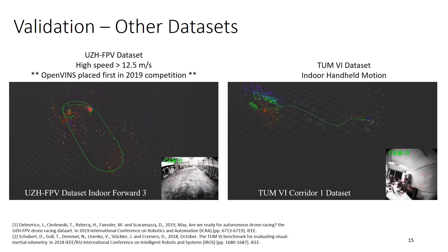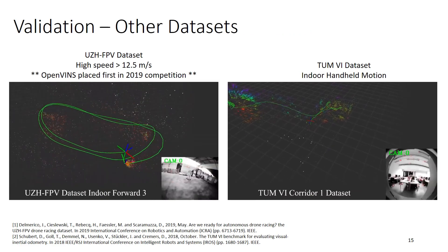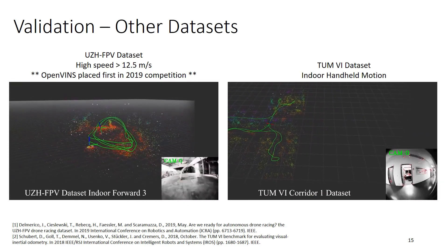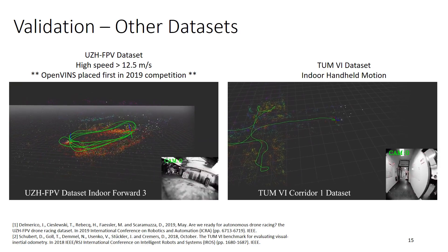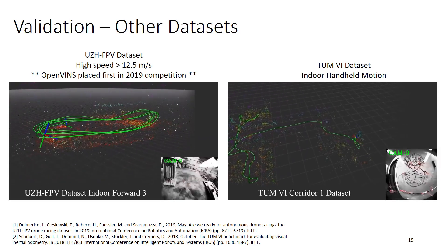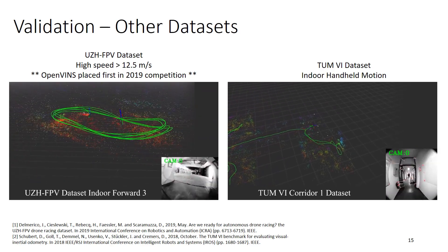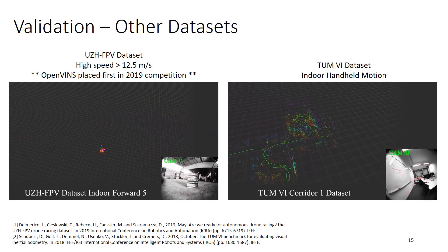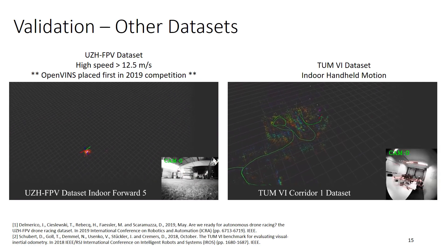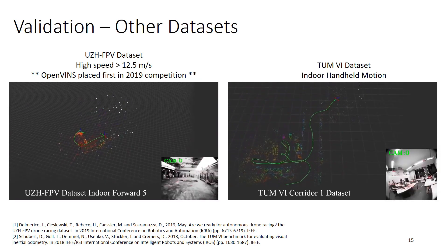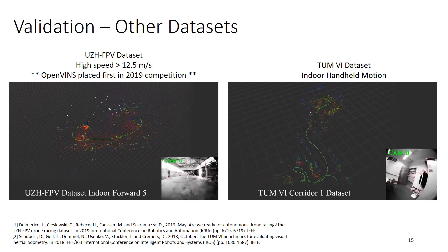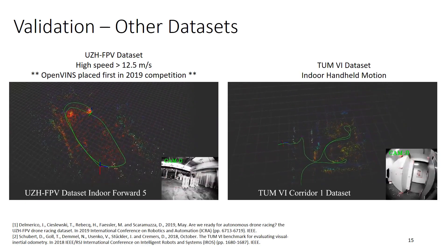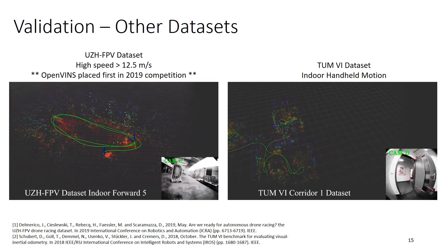We are able to run on multiple other datasets. We are able to run on the UZH FPV dataset, which is a very high speed UAV dataset. We did place first in the 2019 competition. Along with that, we are able to run on the TUM VI dataset. These are really there along with the EuRoC MAV. Any researcher that wants to come in can start running on these datasets and can start evaluating and testing whatever improvements to visual inertial state estimation on any of these datasets.